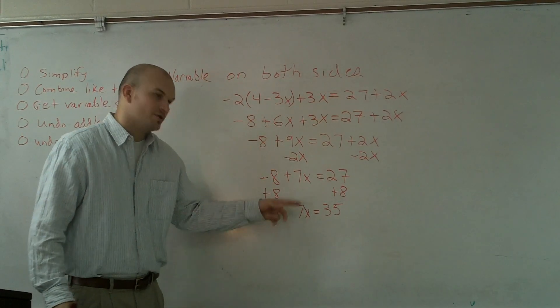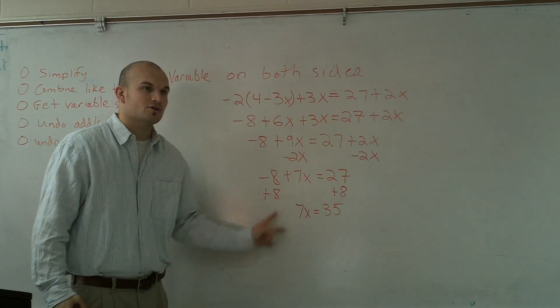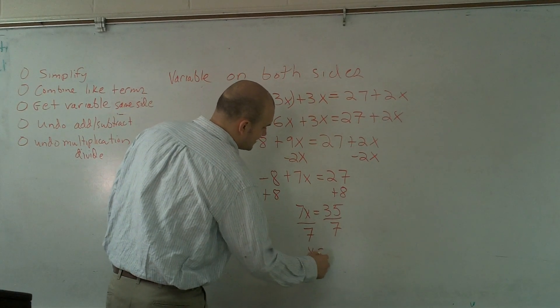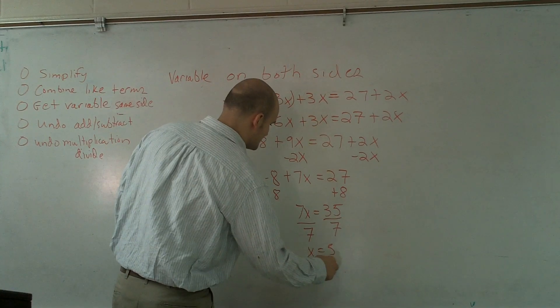Now, I need to undo multiplication. To undo my variable being multiplied by 7, I need to divide by 7. Therefore, x equals 5.